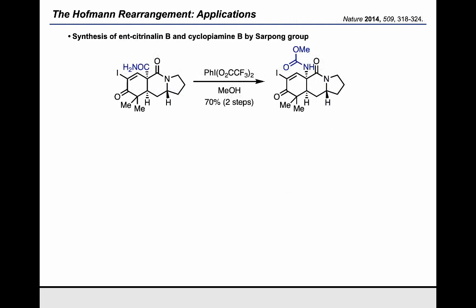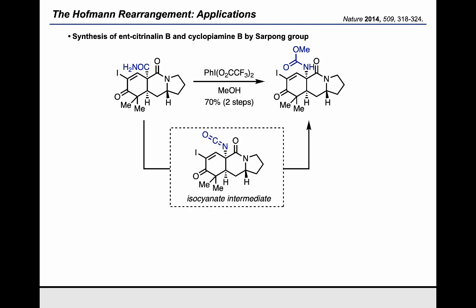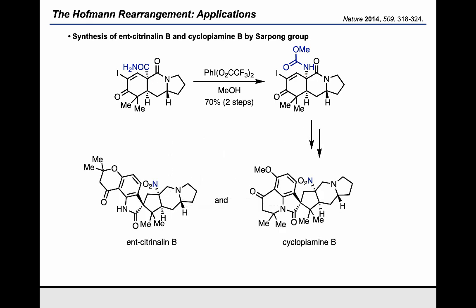One final example comes from the Sarpong group, who in their synthesis of citrinaline B and cyclopiomine B, published in Nature in 2014, employed a hypervalent iodine reagent to convert a hindered carboxamide into a methyl carbamate. Once again, this proceeds through the isocyanate intermediate and the stereochemistry is preserved. Using that, they were able to install the nitrogen at that key position.